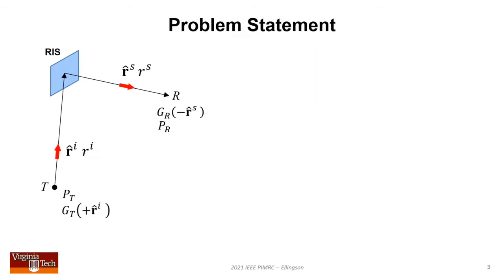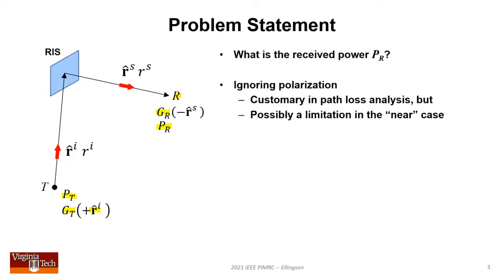Let's start with a problem statement and notation. P sub T is the transmit power through antenna directivity G sub T in the direction of the RIS. At the RIS, power is scattered towards the receiver through receive antenna directivity G sub R, yielding received power P sub R. The question is, what is the received power? I'm ignoring polarization as customary in path loss analysis.